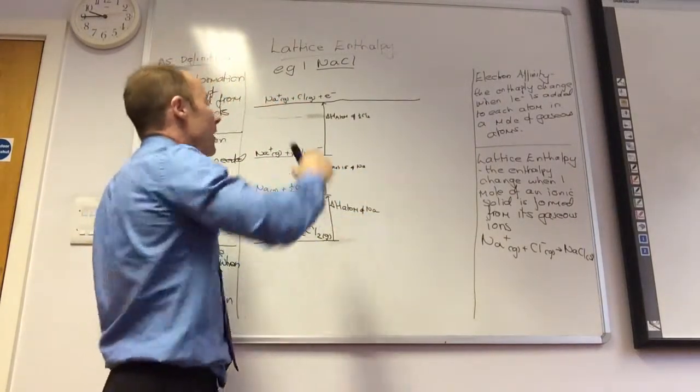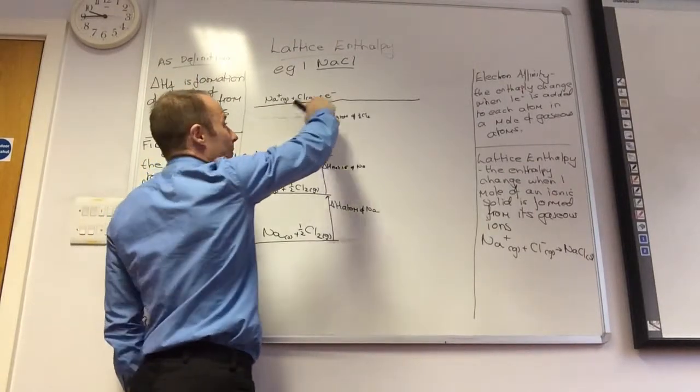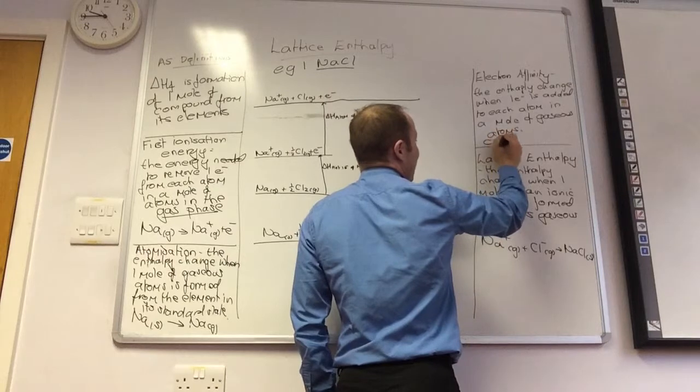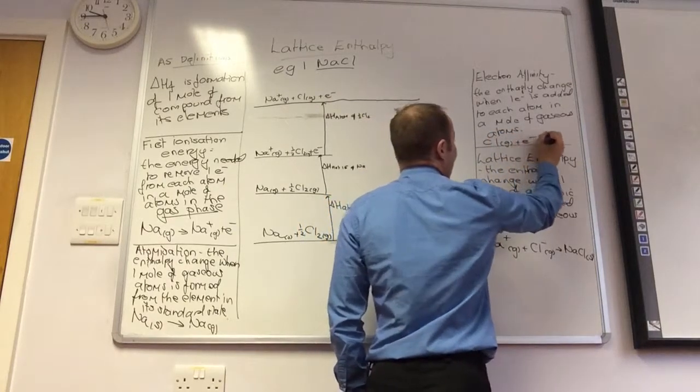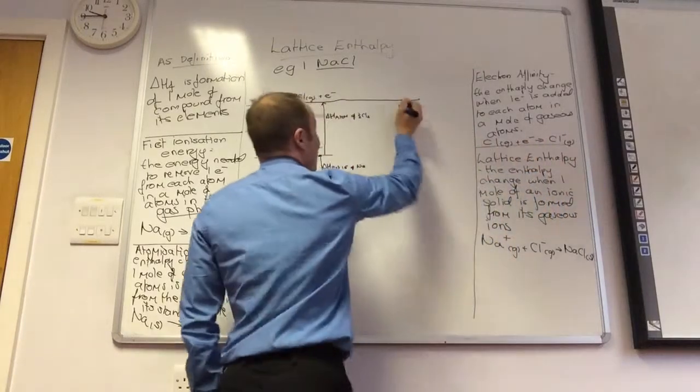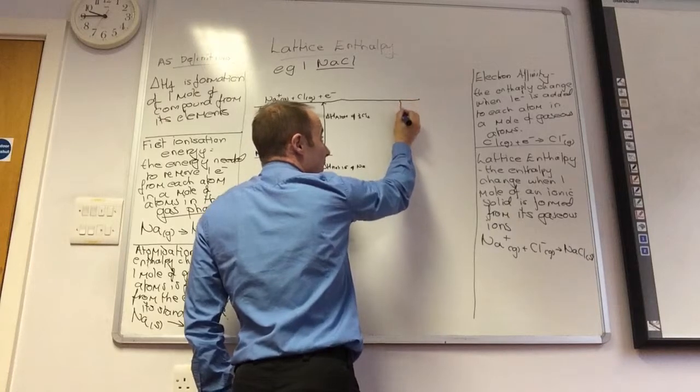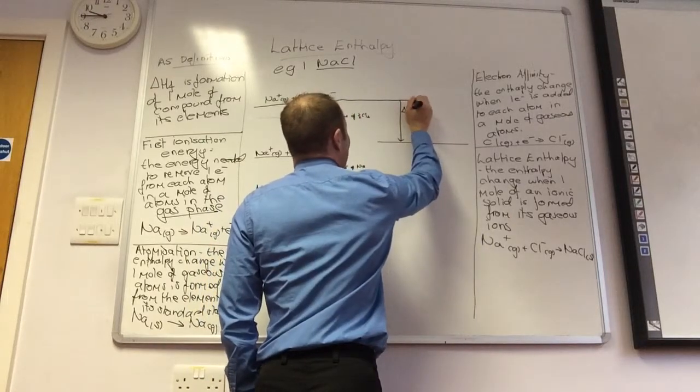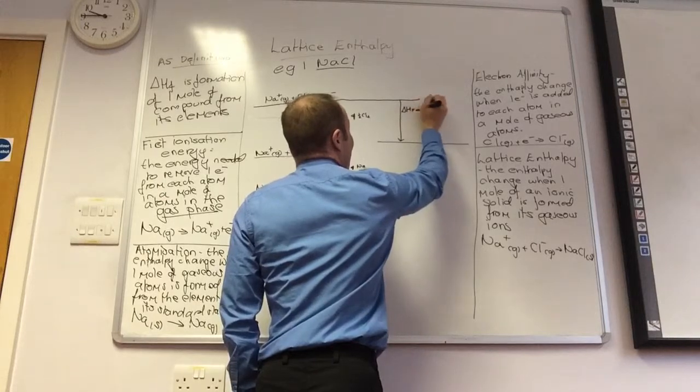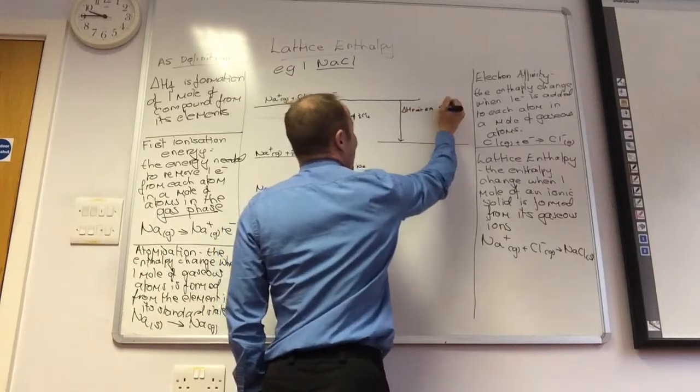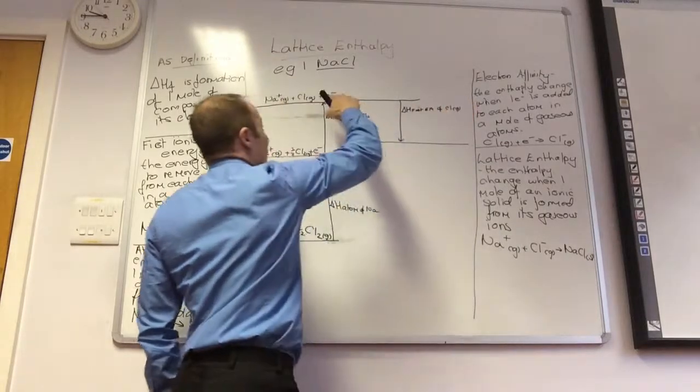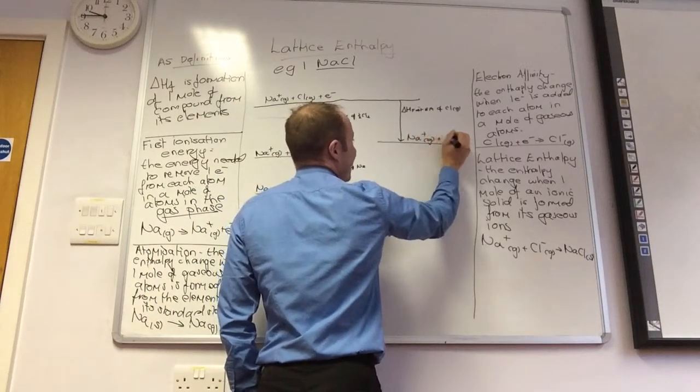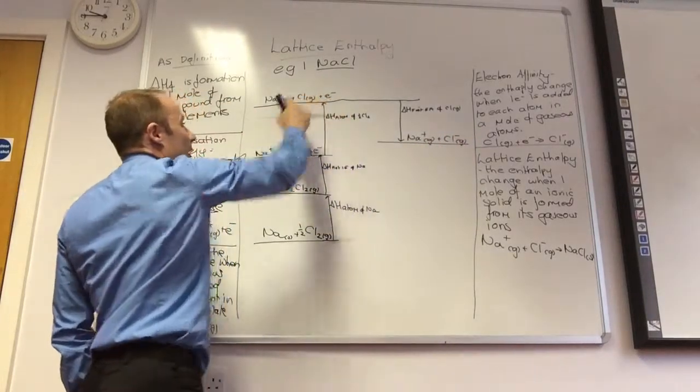The first electron affinity. I've now got Cl gas and an electron, so I need to do this bit here. I need to do the electron affinity. So an example of electron affinity would be Cl plus an electron to go Cl minus gas. And my arrow is going to come down. The reason why it comes down is it's actually an exothermic process. It's a negative number. So this is delta H first EA, electron affinity of Cl gas. And I've popped that electron onto that. So I have now got Na plus gas plus Cl minus gas. I've taken that bit and popped it on there.